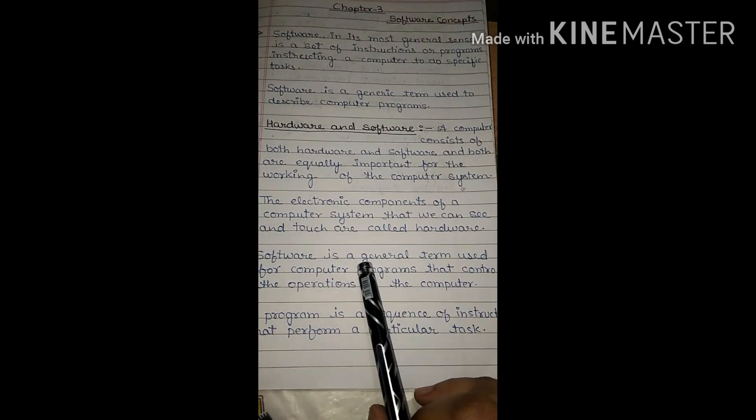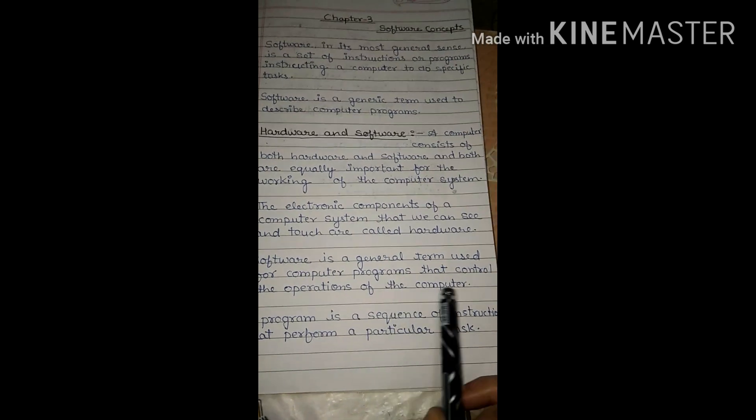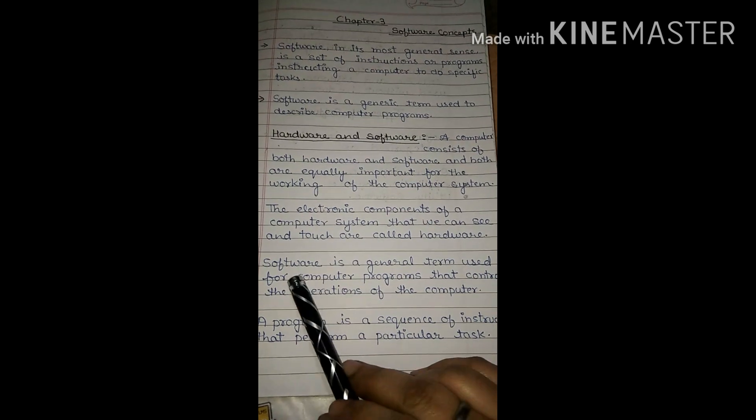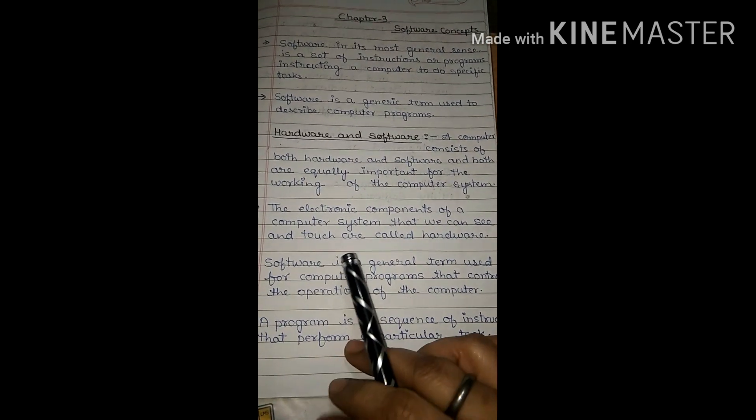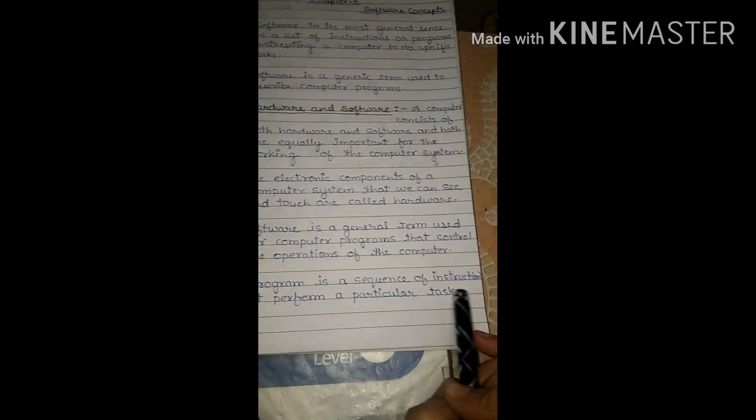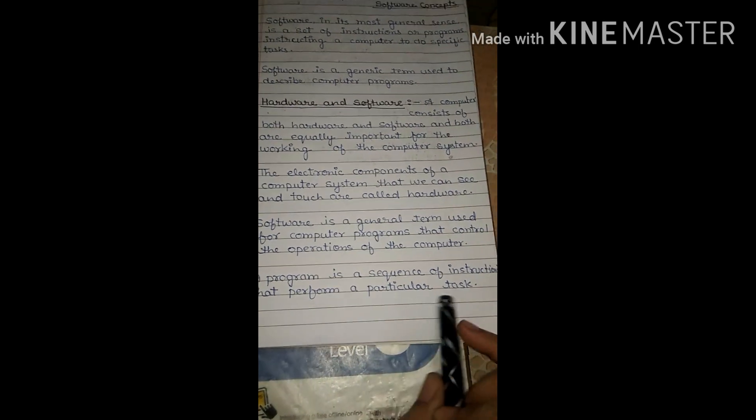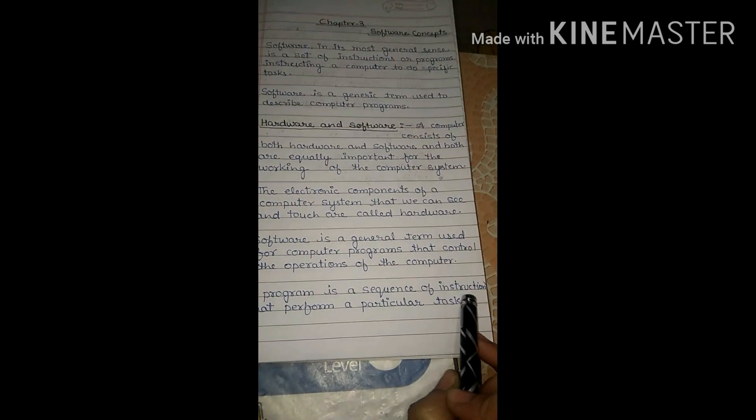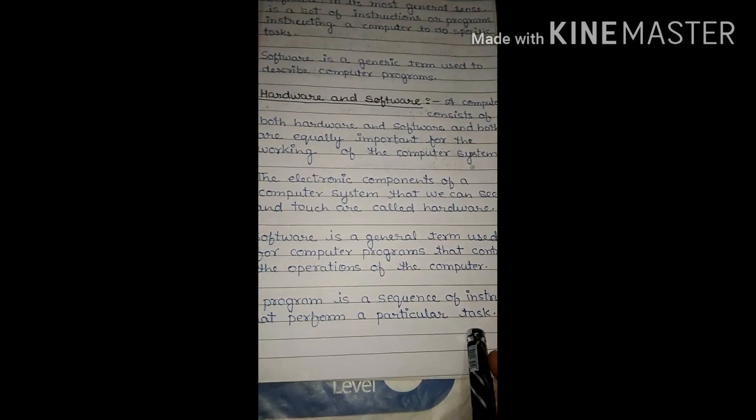Software is a general term used for computer programs that control the operations of the computer. Software controls the computer's programs. A program is a sequence of instructions that performs a particular task.